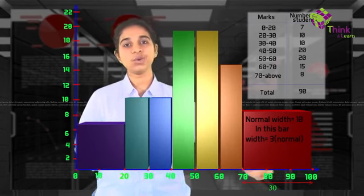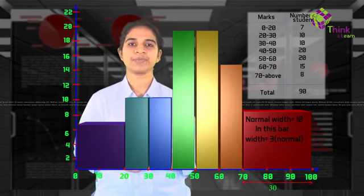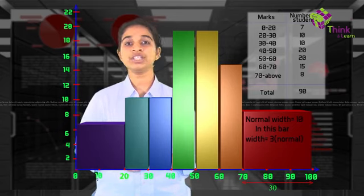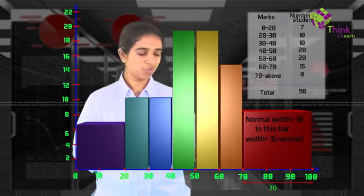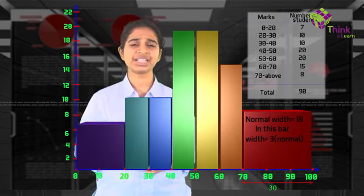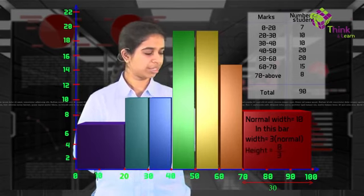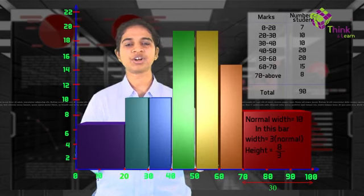I've taken the width as 3 times and I've still taken the height as the entire frequency. That is not true. Because height does not represent number of students, area needs to represent number of students. Which is why if width is 3 times, then we need to make the height 1 third. So because width is 3 times here, we'll make the height 1 third. So instead of drawing 8, we'll draw 8 by 3.